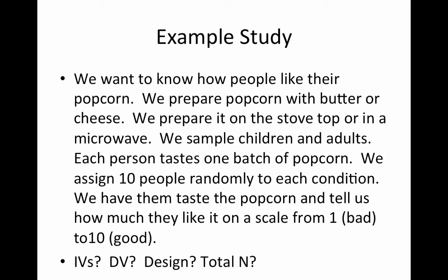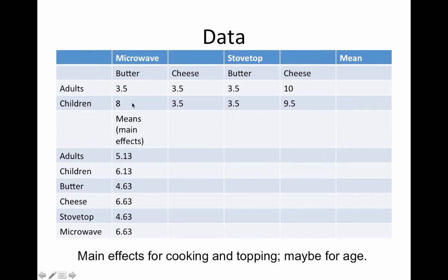What are our IVs, dependent variable, design, and total N? The dependent variable is how much they like popcorn. Butter or cheese is the first independent variable; stovetop or microwave is the second; and children versus adults is the participant factor — we randomly assign children and adults to each condition. We want ten people in each cell, so how many people do we need? We need 80 people.